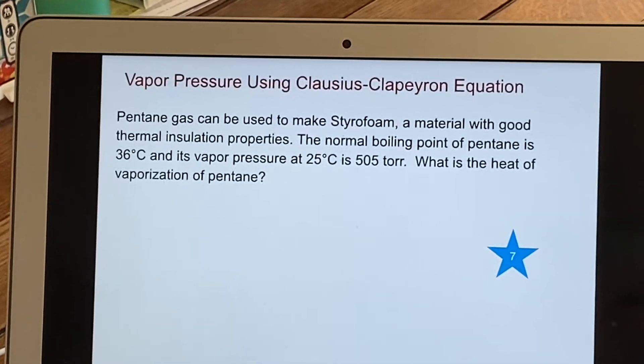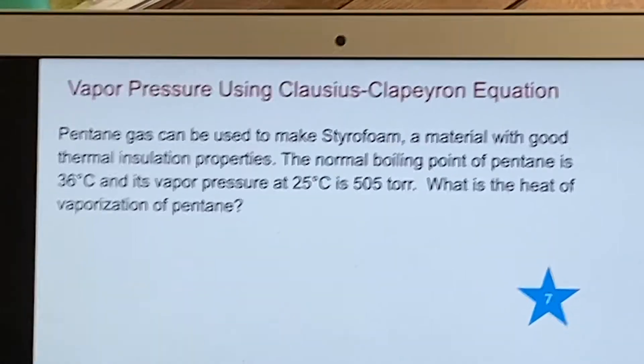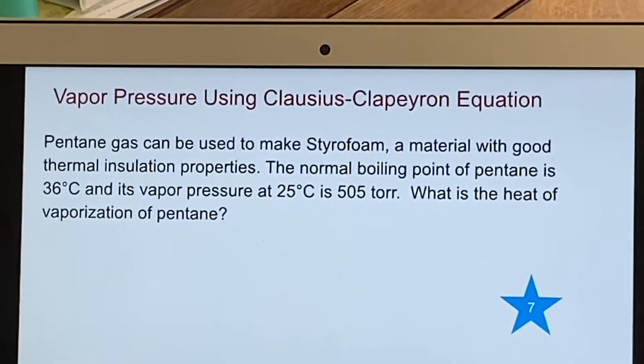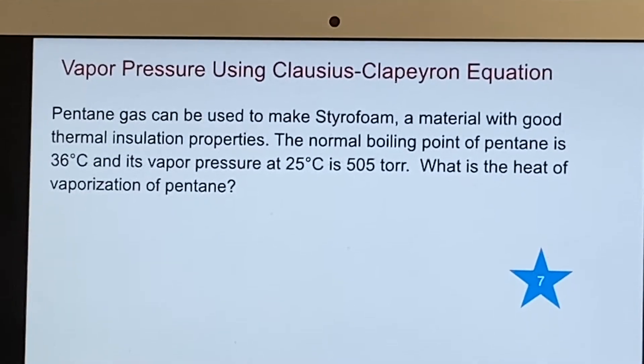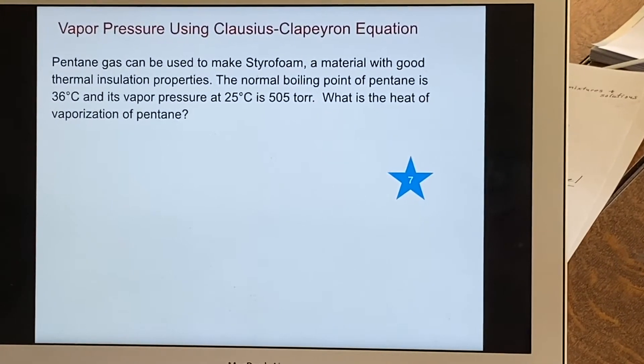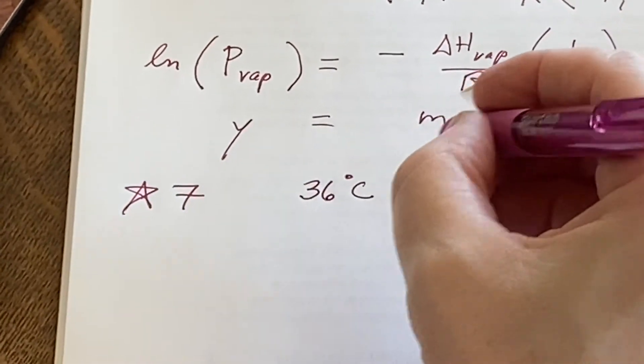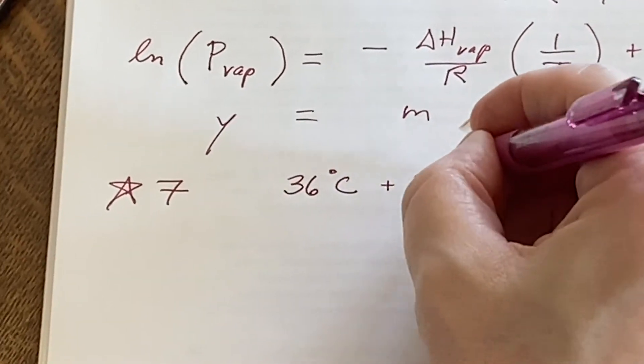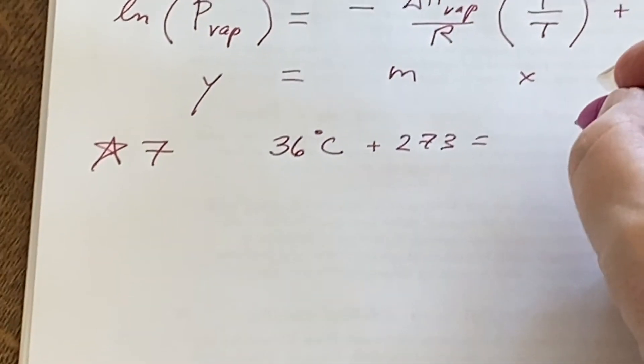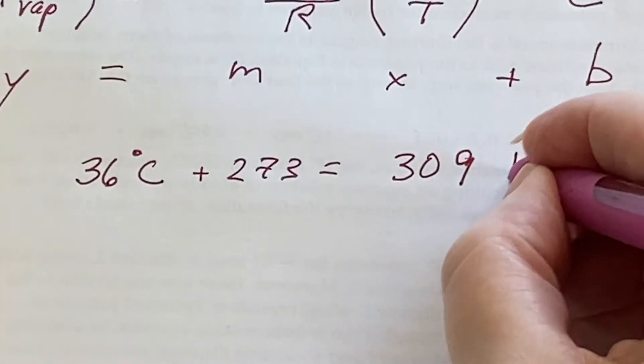Vapor pressure using the Clausius-Clapeyron equation. Pentane gas can be used to make styrofoam, and the normal boiling point of pentane - they're telling us a piece of information. If I'm talking about the normal boiling point, 36 degrees Celsius, I better add something to that and turn it into Kelvin. So that would be 309 Kelvin.